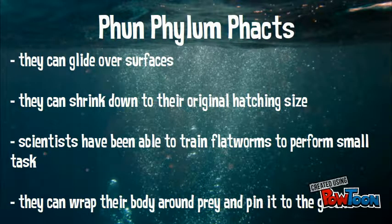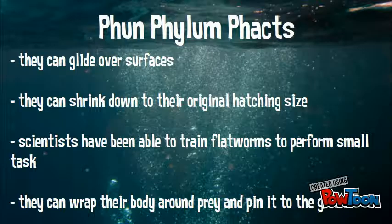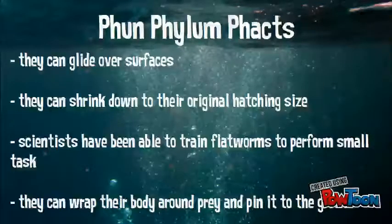Fun phylum facts. Flatworms can glide over surfaces. They can shrink down to their original hatching size. They can wrap their body around prey and pin it to the ground. And scientists have been able to train flatworms to perform small tasks.